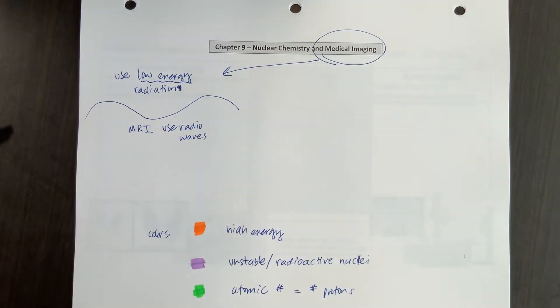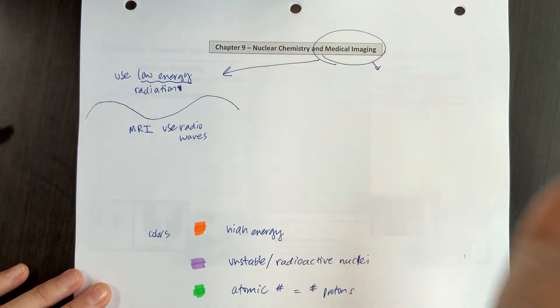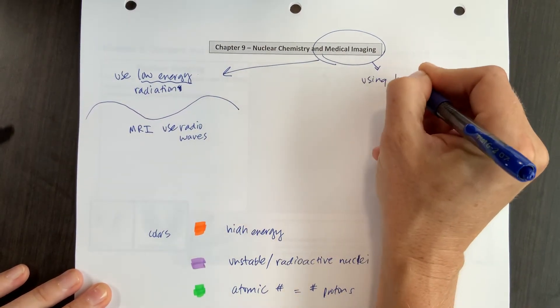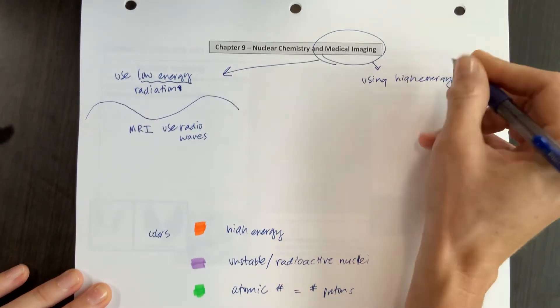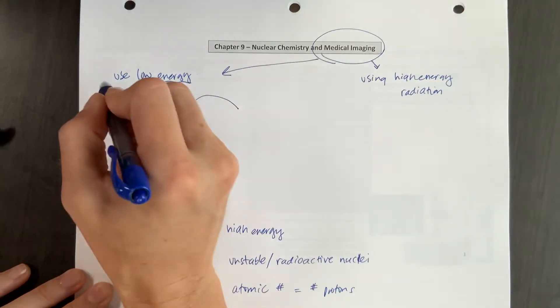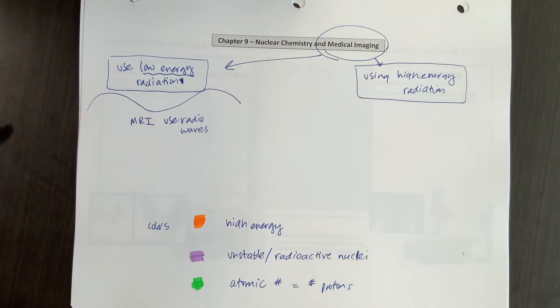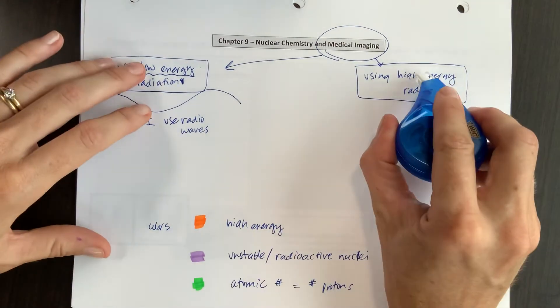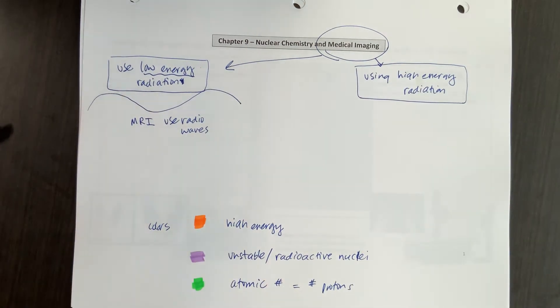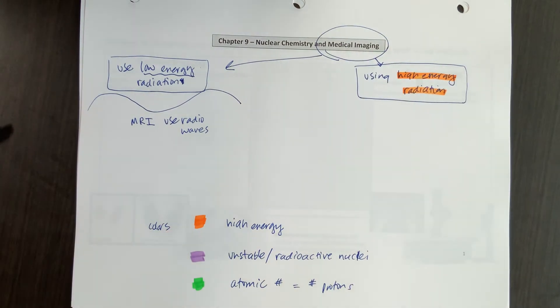Now, our focus is going to be on a different group of imaging types. And that's going to be using high energy radiation. So we can use low energy radiation, or we can use high energy radiation. So high energy radiation is going to have lots of energy, like our orange color there.